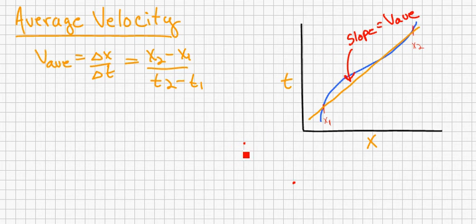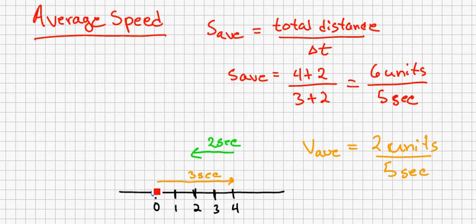For the one-dimensional motion example used in the average speed discussion applied to average velocity, we see that according to the definition of average velocity, V sub-av equals x2 minus x1 over t2 minus t1. In this case, our x2 is going to be where the particle ends up at the end. We move four units to the right, but we move back two units to the left.